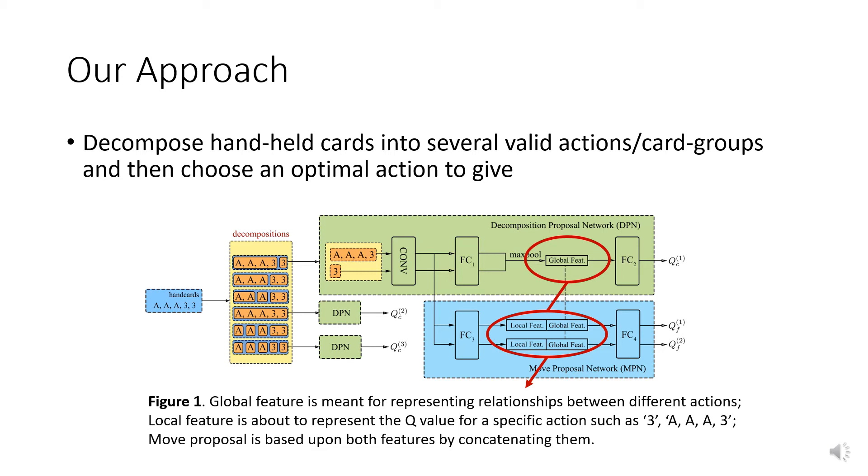And then choose an optimal action in Move Proposal Network. Relations between different actions are explicitly captured with max pooling and integrated with local action features into the final Move Proposal Network.